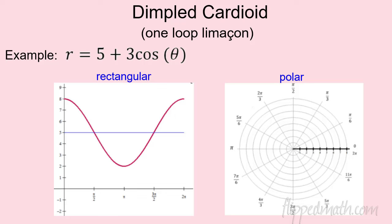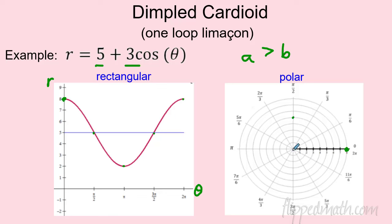Next is the dimpled limaçon, which occurs when a is greater than b. For 5 + 3cos(θ), the midline is at 5 and amplitude is 3. It starts at 8, never hits zero — it's always positive. Key points: at π/2, r = 5; at π, r = 2; at 3π/2, r = 5; back to 8 at 2π. Let's look at the graph.